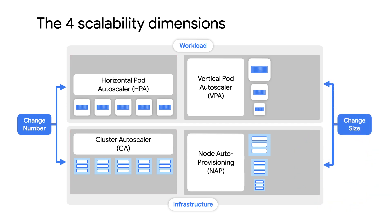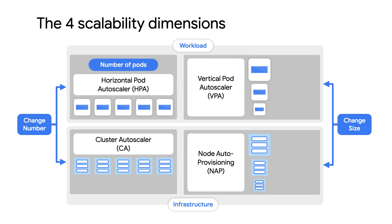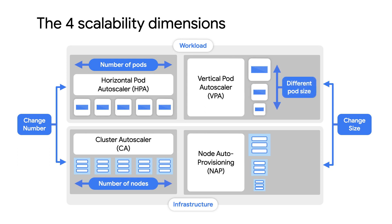On the right side of the diagram are autoscalers which change the size of something. The vertical pod autoscaler, or VPA, can help you set the best resource requests and limits for the workloads you're running in Kubernetes pods. The node autoprovisioner can select compute instance sizes in order to most efficiently pack your workloads based on resource utilization. Together, these four dimensions of autoscaling provide tools that enable you to run both the infrastructure and the workloads themselves on your Google Kubernetes Engine clusters efficiently, with minimal configuration as your cluster's needs change.